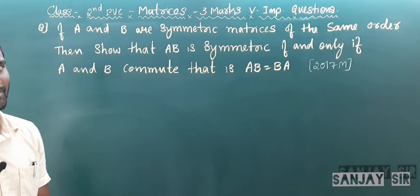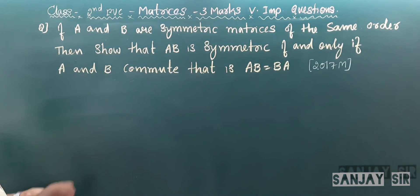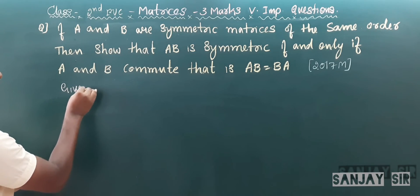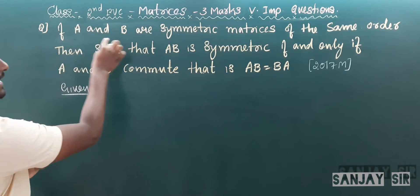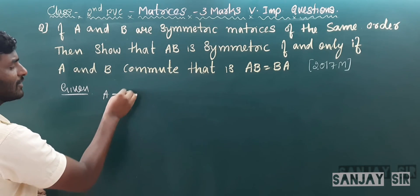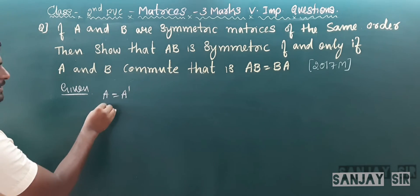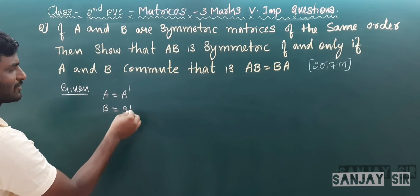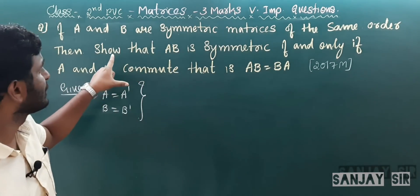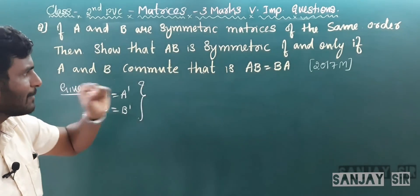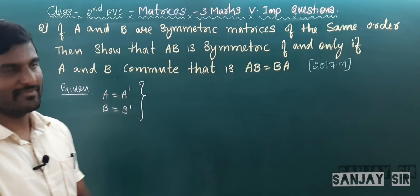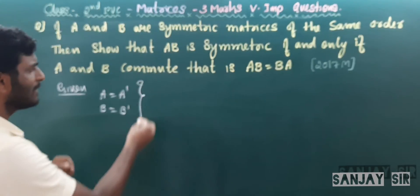Given: A and B are symmetric, so A = A' and B = B'. We have to show that AB is symmetric. First let us write what is given: A = A' and B = B'. We need to prove AB is symmetric, meaning AB = AB'. There are two conditions to prove — forward and backward.